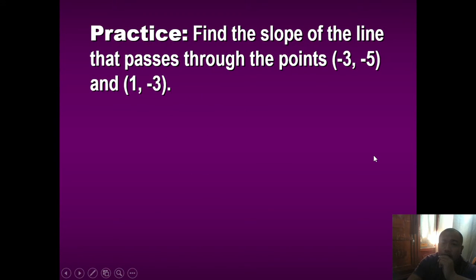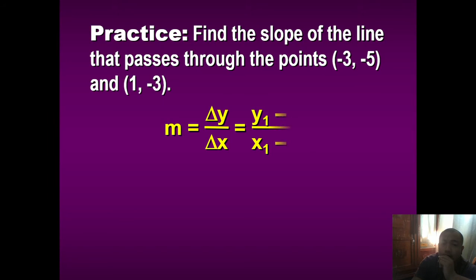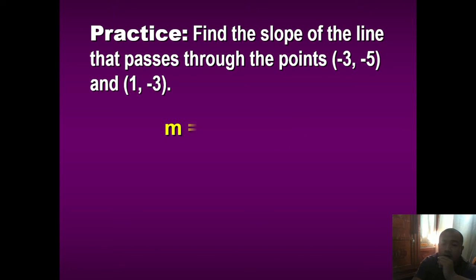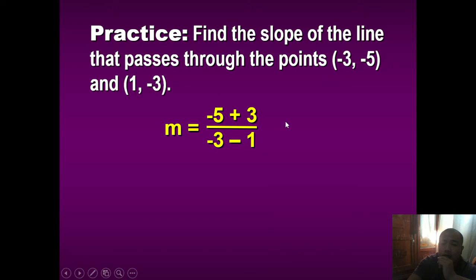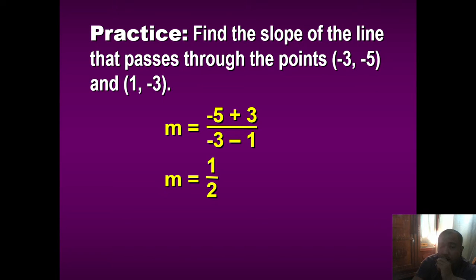Practice: find the slope of the line that passes through (-3, -5) and (1, -3). Change in y over change in x: (-5 - (-3)) / (-3 - 1). Wait — let's reorder: (-3 - (-5)) / (1 - (-3)) = (-3 + 5) / (1 + 3) = 2 / 4. Negative 2 over negative 4 is positive one half.